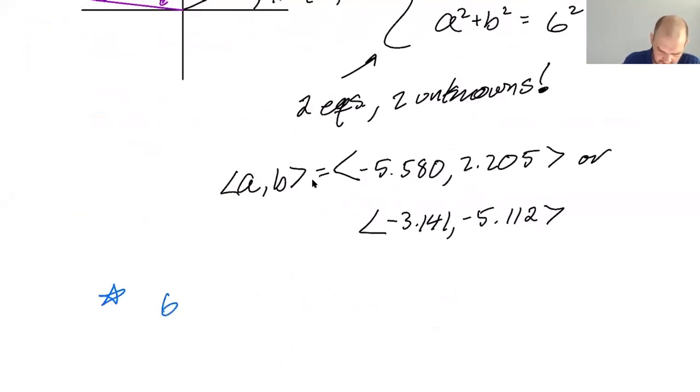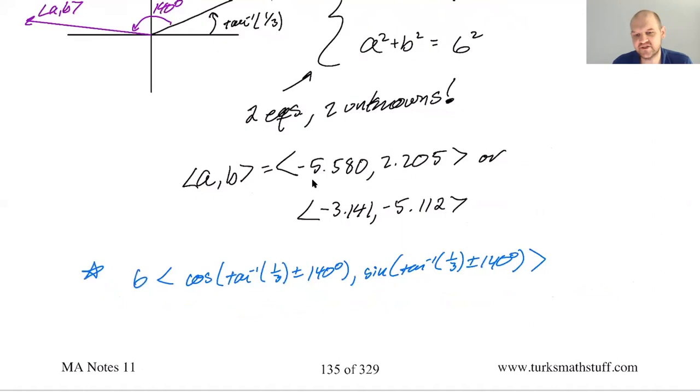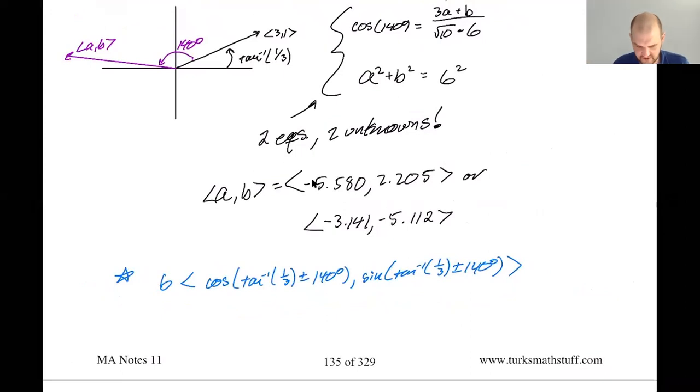So do six cosine of, 140 plus tan inverse. You know what? How about this? Let's do the arctan inverse of one third. And then I'll say plus or minus 140 degrees comma sine of the same. So tan inverse of one third plus or minus 140 degrees. Something I don't like about this answer. I don't know. Like it's the right answer. I just, I don't really like that method as much. I don't know why. Maybe I'm just biased because I'd prefer to do it the other way. Who could say anyway,